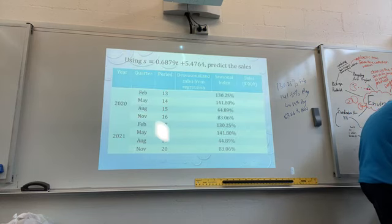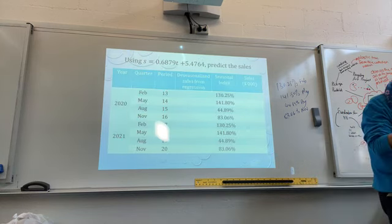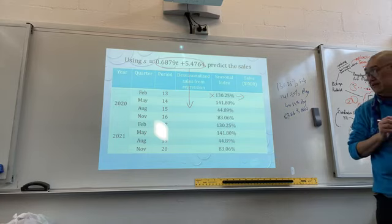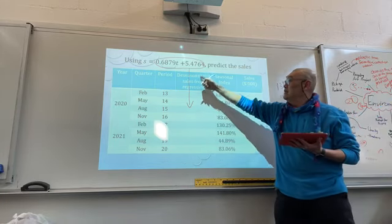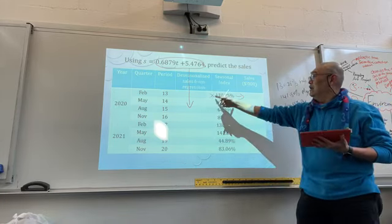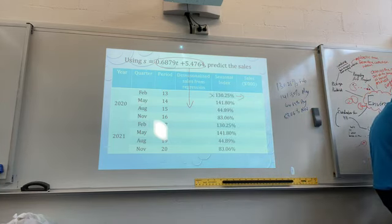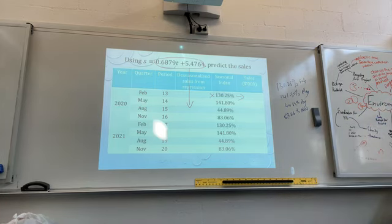Here is the table I gave you for predicting sales. The de-seasonalized value times the seasonal index gives the predicted sale. Try a few numbers so you're used to it. It's basically the same idea — using the seasonal index to factor the seasonal effect back in.